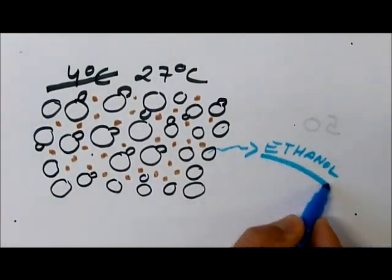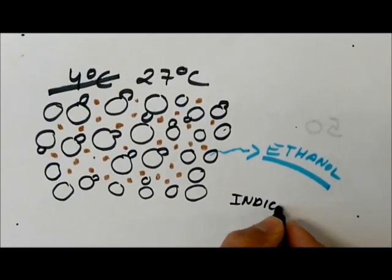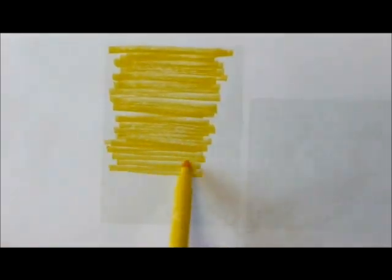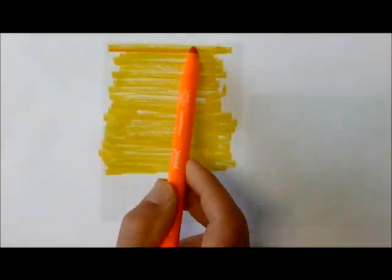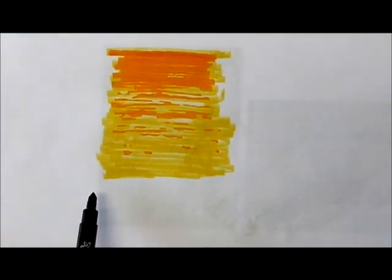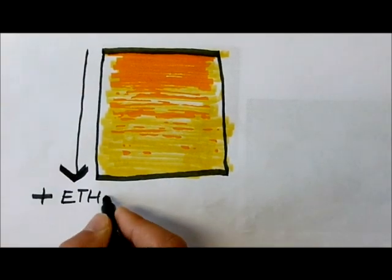To identify it, we'll use a proper indicator, like potassium dichromate, which will react with ethanol and change its color. Using this indicator, we know that our solution has ethanol when it changes its color from orange to yellow, so more ethanol means more yellow.